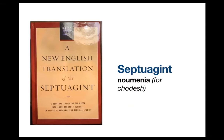Now we move from the Hebrew words for month — chodesh, yerach, and yareach — to the Greek Septuagint. The Septuagint is the Greek translation of the Old Testament, and it is the oldest complete Bible known to man. It began to be translated around 250 BC, before the time of our Messiah, so that Greek-speaking Jews in Egypt would have a Bible to read. Greek was the lingua franca of the time — much like English is today — primarily because Alexander the Great, through his conquests, made Greek the language of the nations he conquered.